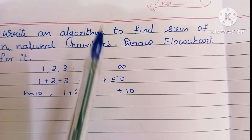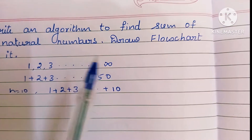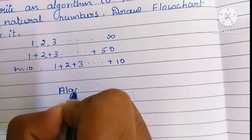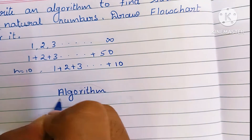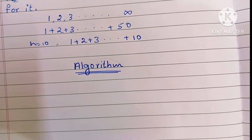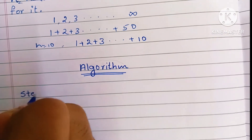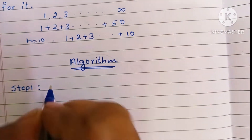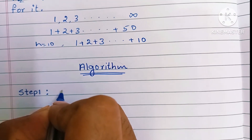Here we have to write an algorithm to find the sum of n natural numbers. An algorithm is a step-by-step process to solve a problem. Step 1: an algorithm always starts with a start statement, so first we have to write the start statement.